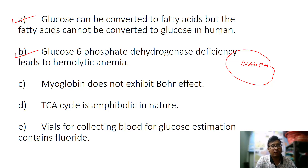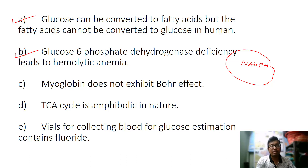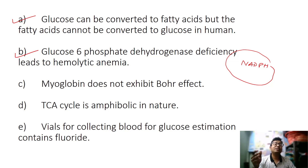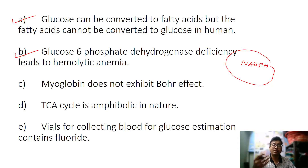This NADPH helps in the maintenance of reduced glutathione — it helps in the reduction of glutathione. Reduced glutathione tackles free radical damage in the body and, by preventing free radical action, protects RBC membranes. So normally, NADPH from the G6PD reaction maintains reduced glutathione levels, and reduced glutathione prevents free radical injury to membranes.